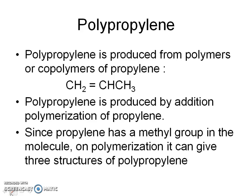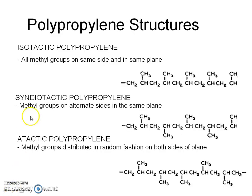Since polypropylene has a methyl group in the molecule, on polymerization it can give three structures: isotactic polypropylene, syndiotactic polypropylene, and atactic polypropylene.